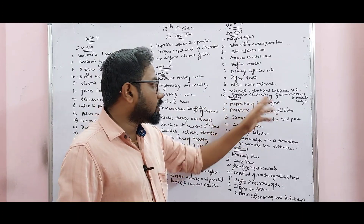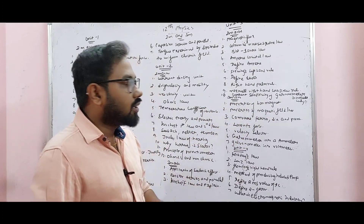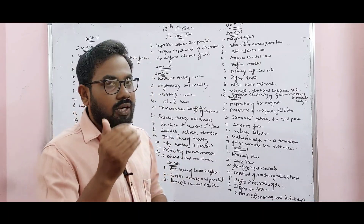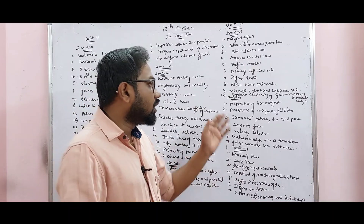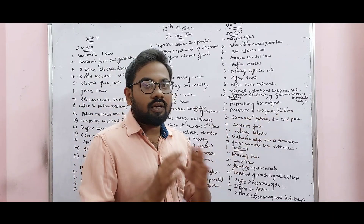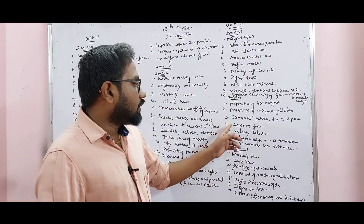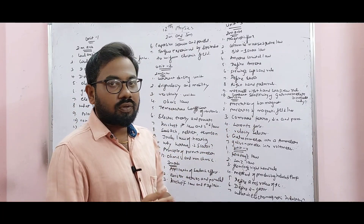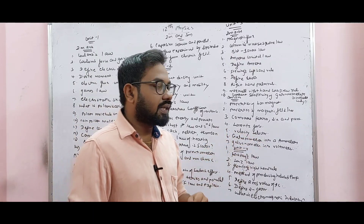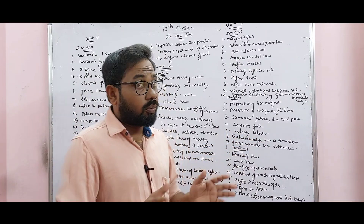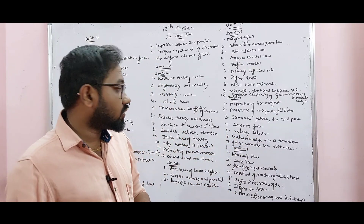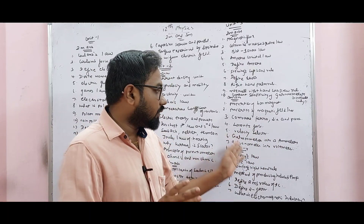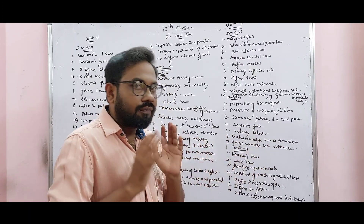3 mark: Properties of bar magnet, properties of magnetic field lines — 2 properties are very important. 3 mark: Compare ferro, dia, and paramagnetic materials — very important. Lorentz force, significance, velocity selector, crossed electric and magnetic fields. Galvanometer to ammeter conversion is very important. Galvanometer to voltmeter conversion is very important.